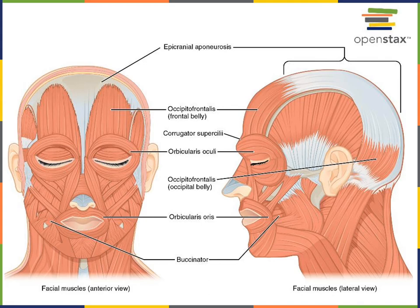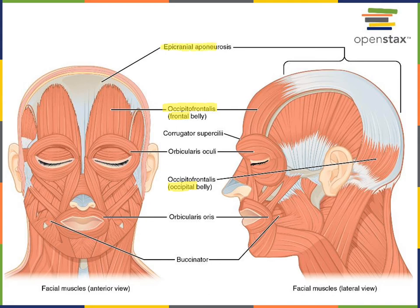Starting here we'll look at the occipitofrontalis, a muscle located on the superior surface of the cranium. Occipitofrontalis has two bellies — two muscular compartments: a frontal belly located on the anterior, just superficial to the frontal bone, and an occipital belly located on the posterior, just superficial to the occipital bone. The two bellies are both connected to a broad tendon on the superior surface of the cranium known as the epicranial aponeurosis.